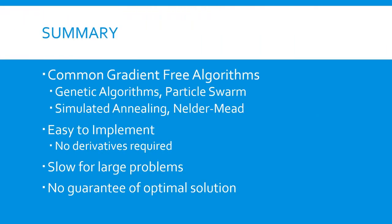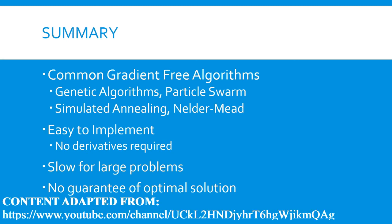In summary, a large variety of gradient-free optimization methods exist, each with their own strengths and weaknesses. Some of the most commonly used methods are genetic algorithms, particle swarm, simulated annealing, and the Nelder-Mead Simplex algorithm. In general, gradient-free methods are easier to implement, and have the advantage of not requiring derivatives. This means that they can be applied to problems that are discrete, discontinuous, or otherwise non-differentiable. Many of the algorithms also do a good job of searching for a global solution, rather than a local solution. On the downside, gradient-free algorithms tend to be very slow for large problems. Many of the algorithms are also stochastic, meaning that they are based on chance, and will not always find the same solution. Finally, there is no guarantee that these algorithms will return an optimal solution, meaning that while the solution found might be better than what you started with, you won't know if it's the best solution possible.